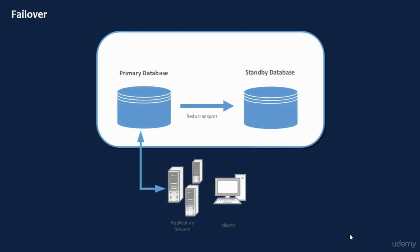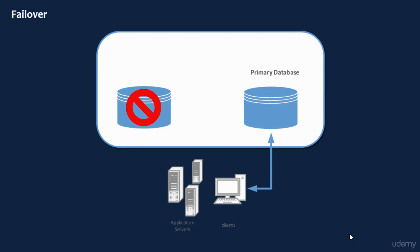This figure illustrates the failover. Failover should be performed only when the primary database becomes unavailable. If the primary database goes down for any reason, one of the standby databases becomes the primary database and the clients and application servers will be connected to the new primary database. This procedure could be automated using fast start failover or done manually by the DBA — we will cover both procedures in this course.